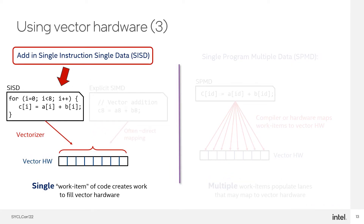Let's also touch on one other programming model that's common and important to consider alongside explicit SIMD and SPMD. Here we're showing Single Instruction Single Data, or SISD, in which a single instance of a typically serial program somehow fills out the data parallel hardware. The vector width of work is somehow extracted from the serial code through a vectorizing compiler, or from programmer directives like in OpenMP, or through other means. In OpenMP, for example, a for loop might have a directive like pragma OMP SIMD on it.